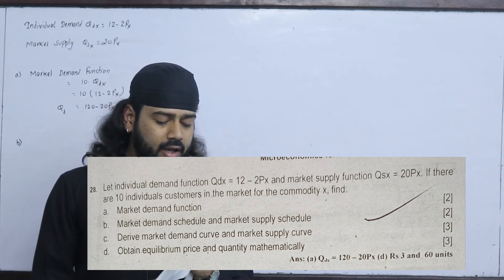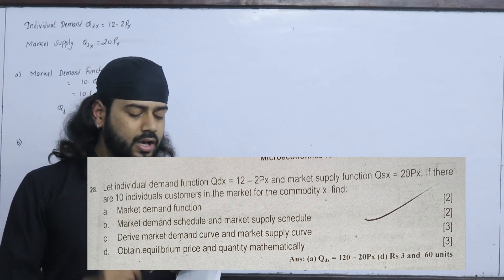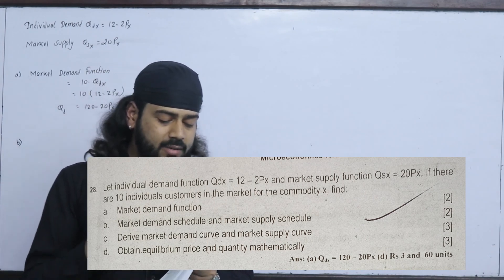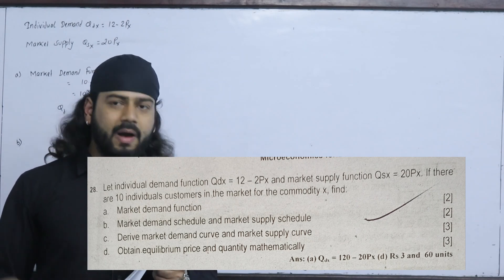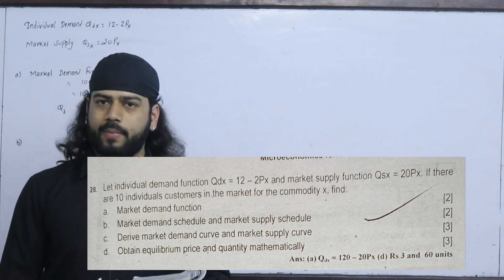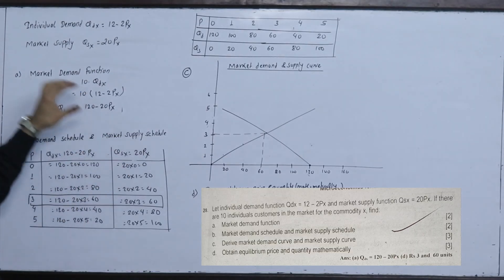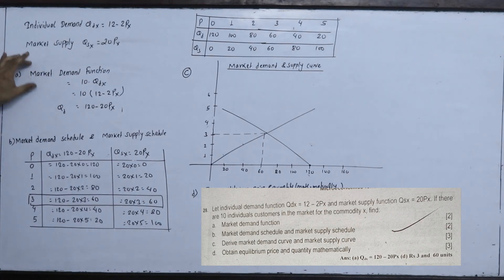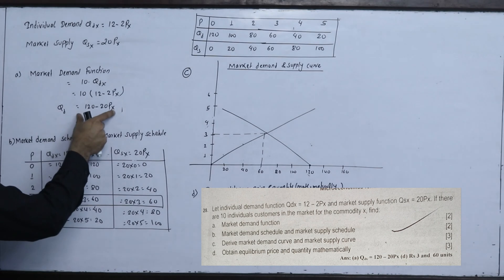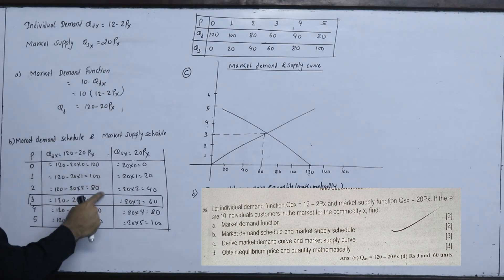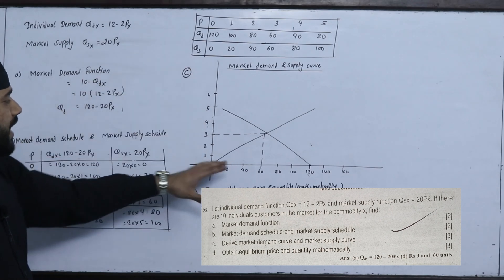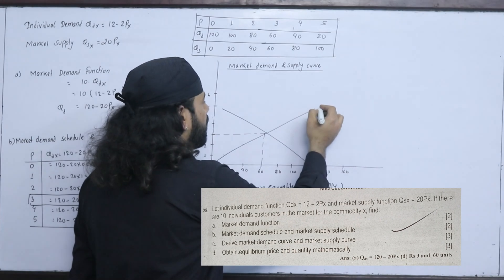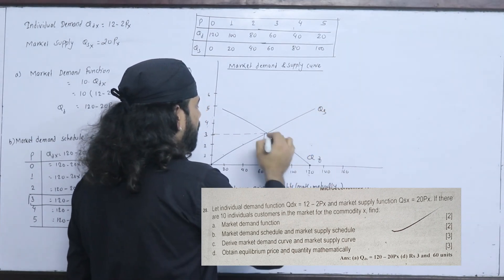We plot the market demand and supply curves. From the demand/supply schedule, when price is 3, demand and supply are both equal at 60 units. This is the market equilibrium price and quantity. Graphically or algebraically, the equilibrium condition gives P = 3 and Q = 60.